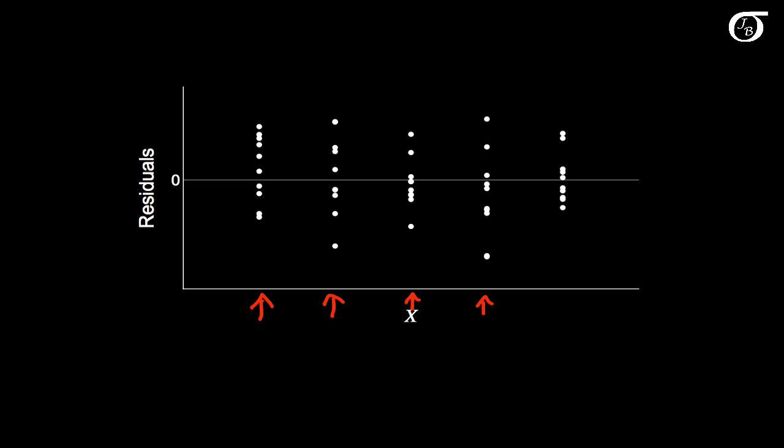But here it's a similar story to the last page. There's not really much going on here. The variability is approximately the same across the board. There's no systematic curvature, nothing indicating non-normality or anything of that nature.